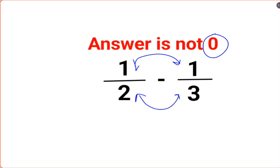So basically, 1 minus 1 is 0, 2 minus 3 is minus 1. So 0 upon anything, the answer for this one should be 0. That's incorrect.